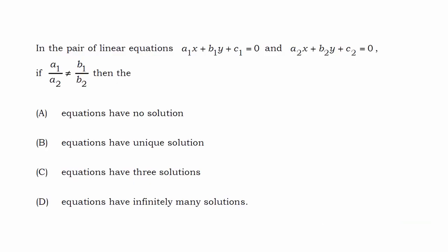In a pair of linear equations, a1x plus b1y plus c1 equals 0 and a2x plus b2y plus c2 equals 0, if a1 by a2 is not equal to b1 by b2, then what is the nature of the solution for the equations?